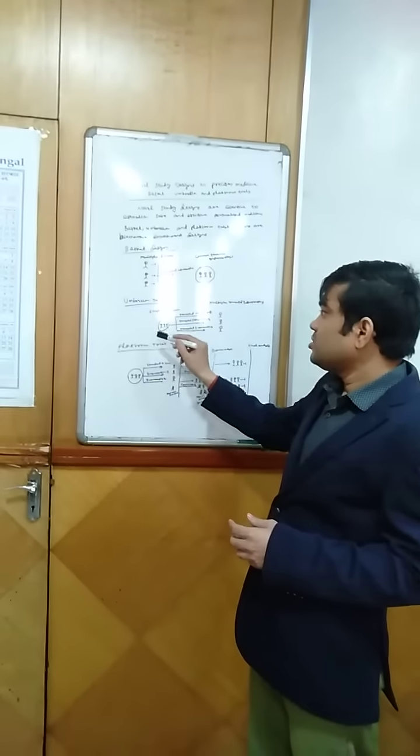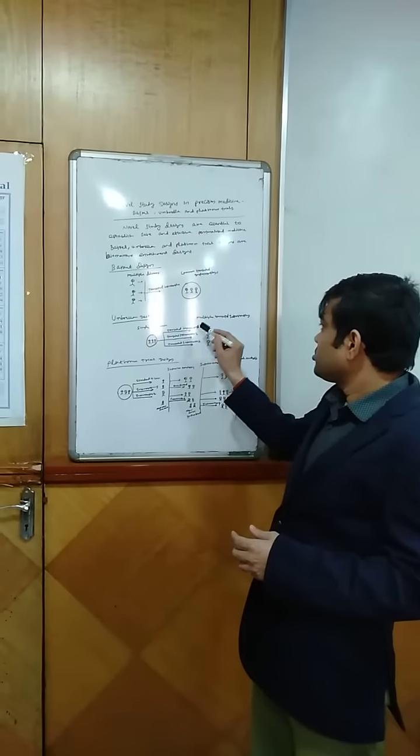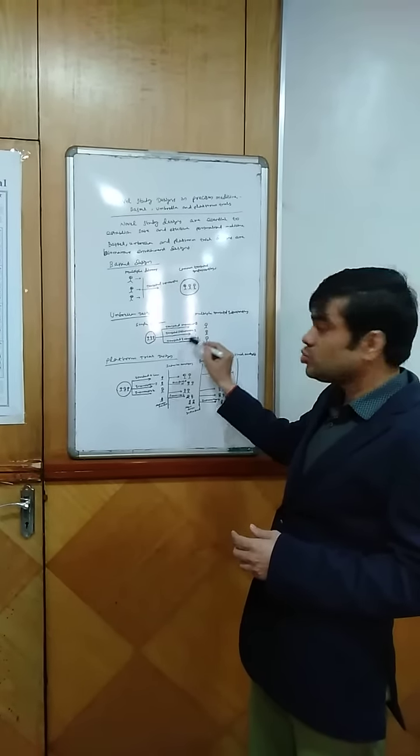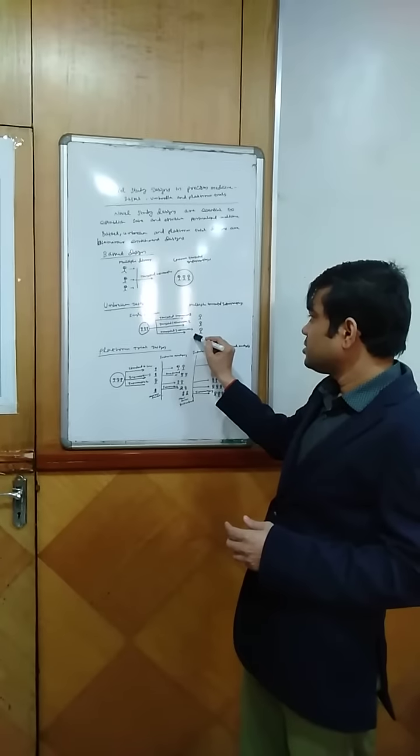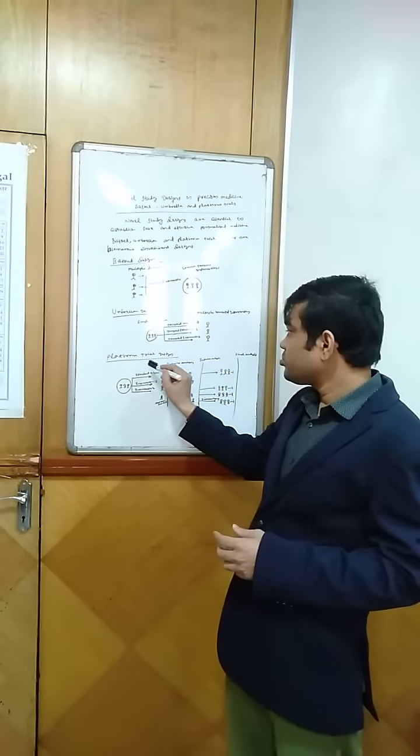In case of umbrella design, there is a single disease, but there are multiple targeted interventions. Like targeted intervention 1, targeted intervention 2, targeted intervention 3 for different mutations. And next is platform trial design.